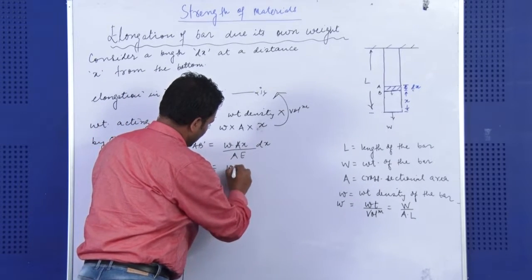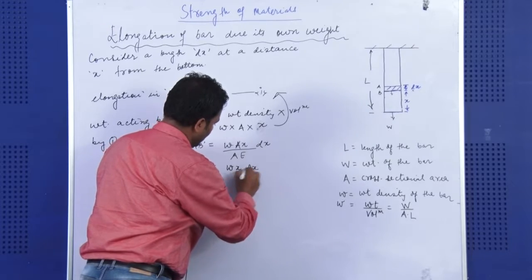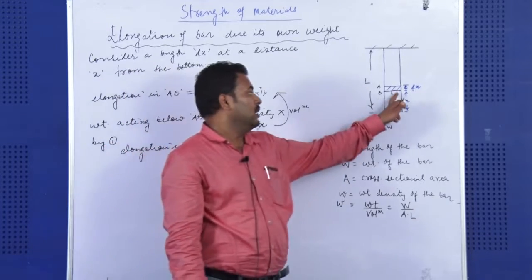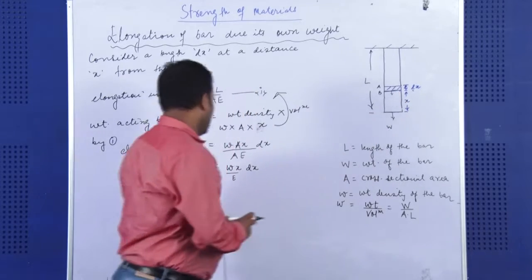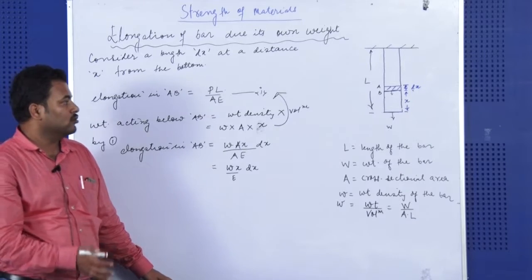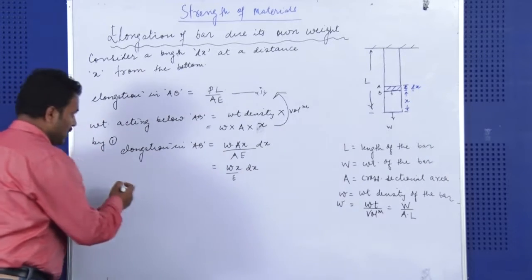So finally, we are at WX DX by E. This is the elongation of the elementary length DX. Now, in order to find the total elongation, we need to integrate or we need to follow the integral mathematics. Let us see how it is done.